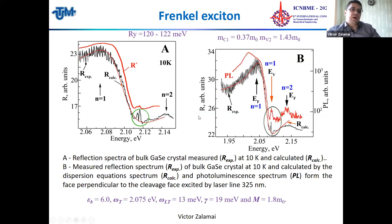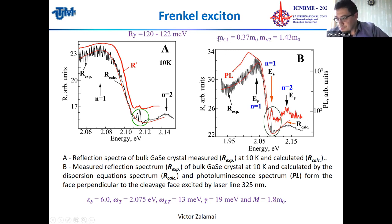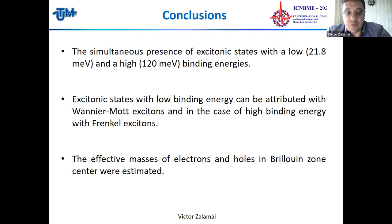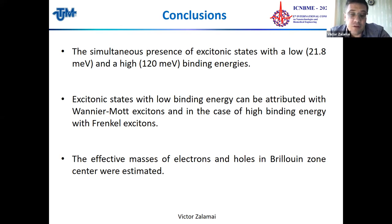We calculated the parameters of the Frenkel exciton — its Rydberg energy is 120 millielectron volts — and also calculated the effective masses of electrons and holes in different valence bands and other exciton parameters.